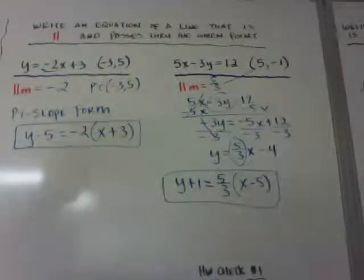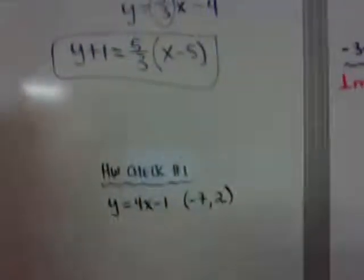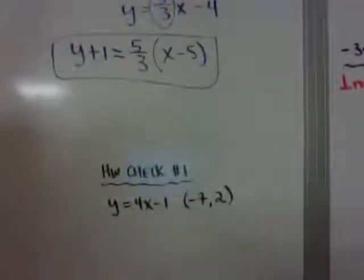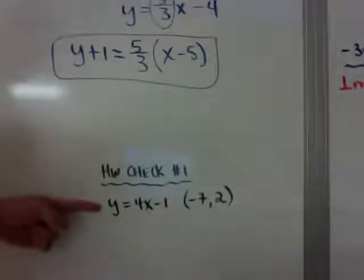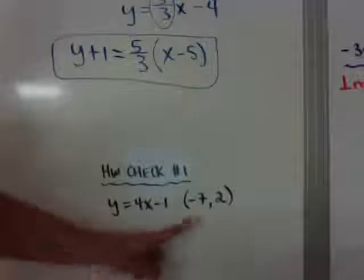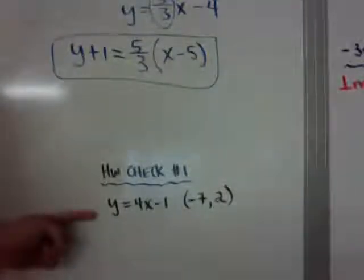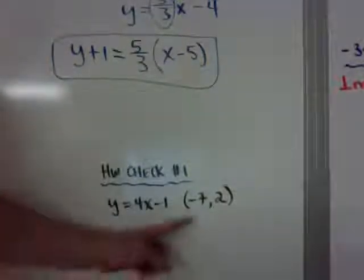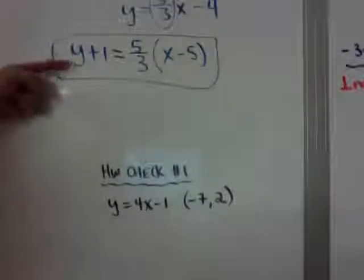And that's how you do it. Here's homework check number 1: find the equation that is parallel to the given line that goes through the given point, for each pair. Leave it in point-slope form, just like we did.